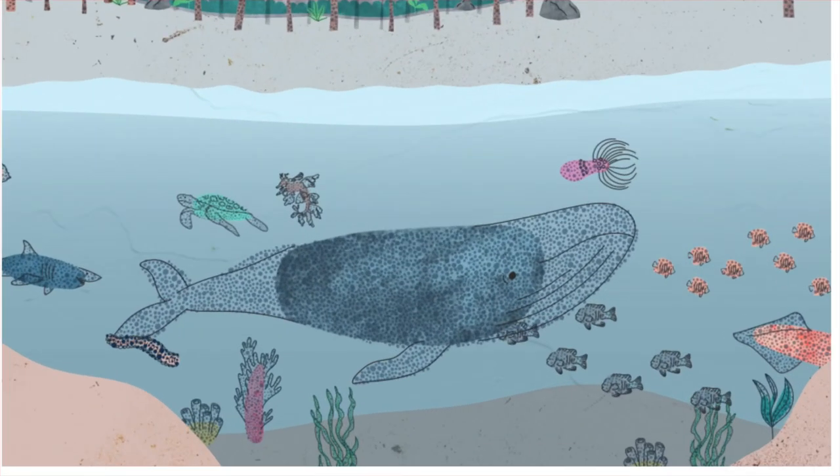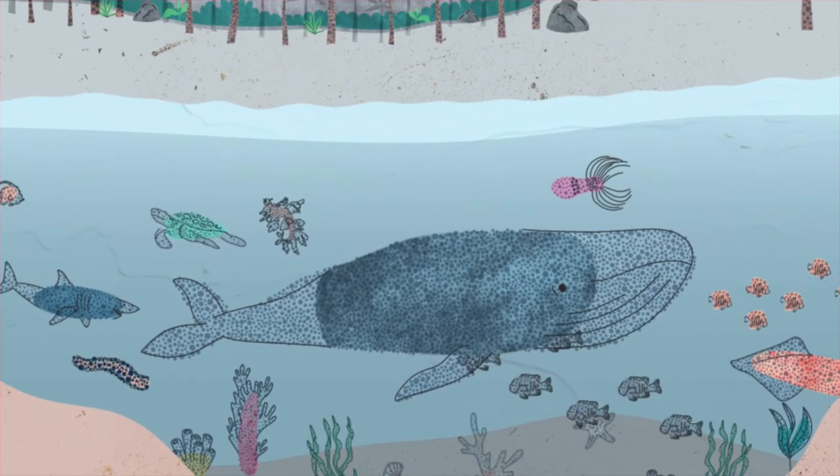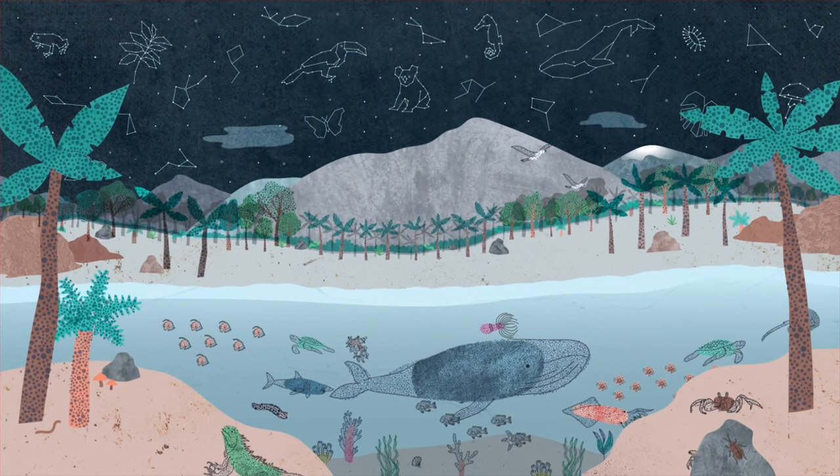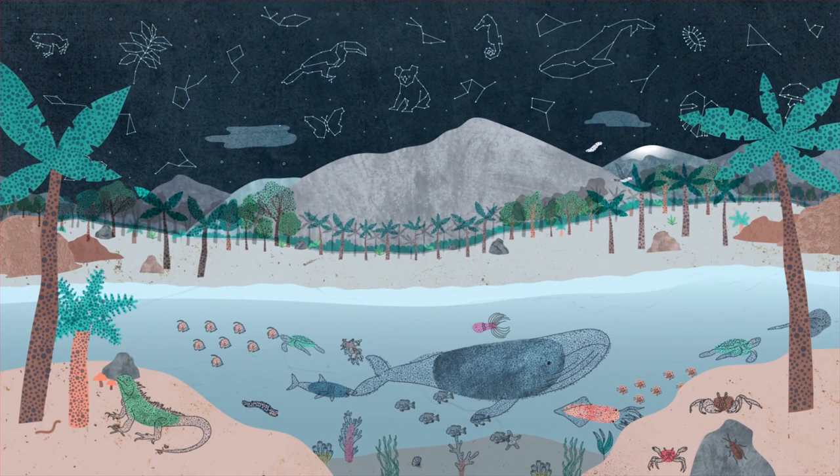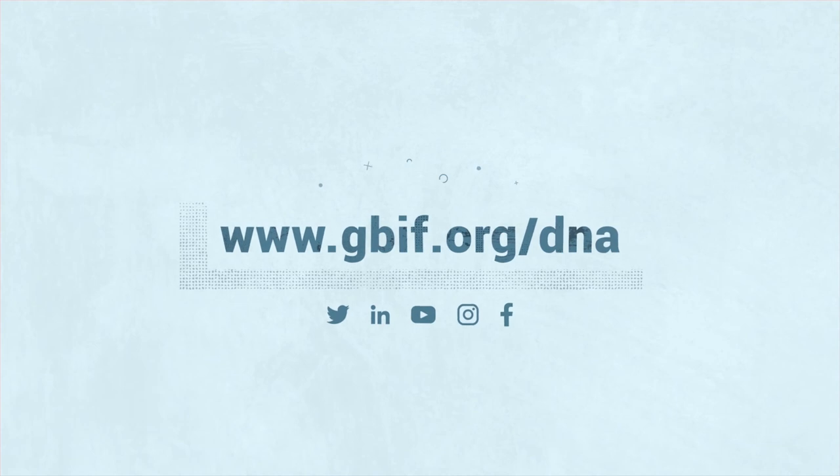By assembling data from different sources, GBIF enables cutting-edge research and expands the biodiversity evidence available for science and policy. To learn more on how GBIF works to provide a more complete and inclusive picture of life on Earth, visit GBIF.org.dna.